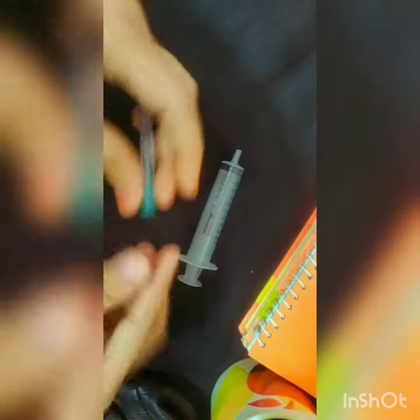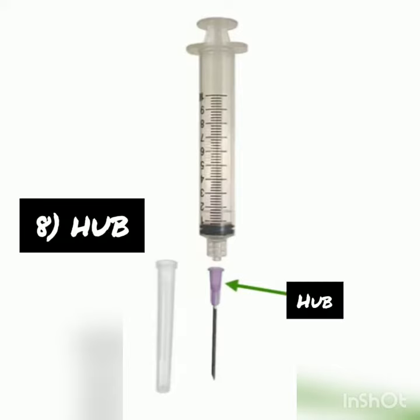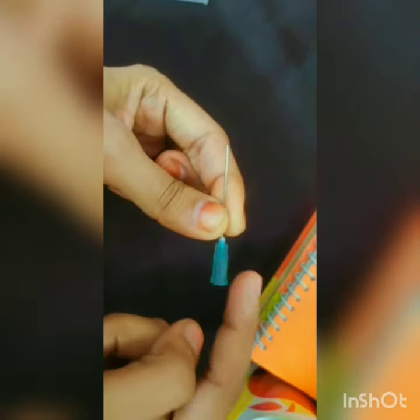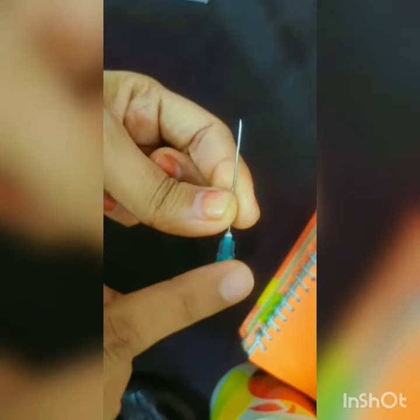Now, moving on to the uppermost part of the syringe — the needle. The needle mainly consists of three parts. Hub: the hub is at one end of the needle and it is the part that attaches to the syringe.